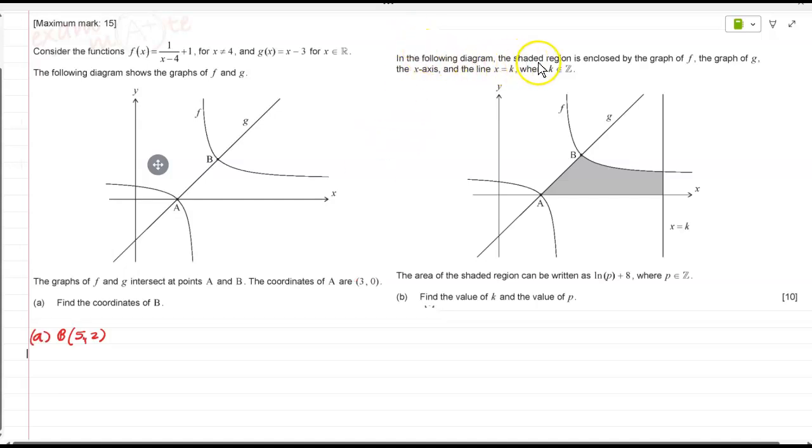Then, in the following diagram, the shaded region is enclosed by the graph of f, this is f, graph of f, correct, the graph of g, correct, the x axis and line x is equal to k. So this is the region enclosed. The area of the shaded region is given by ln p plus 8, where p belongs to a set of integers and the value of k and value of p. Now, what are the?